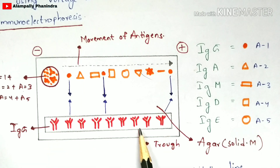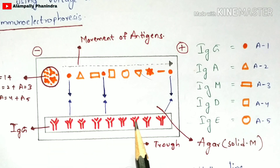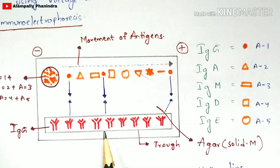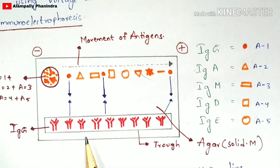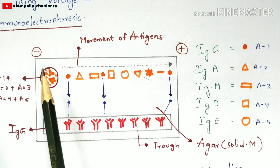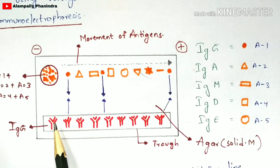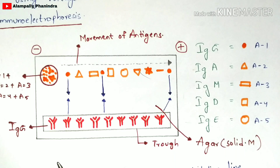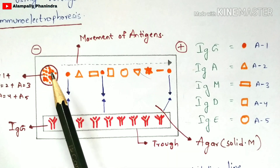Next, you prepare a trough at the base region of the glass slide. In this trough you add a particular type of antibody solution — for example, only IgG antibodies. So in the well there are different types of antigens, but in the trough only one specific antibody type is added. The main aim of immunoelectrophoresis is to determine whether a particular type of antigen is present or not in a sample.